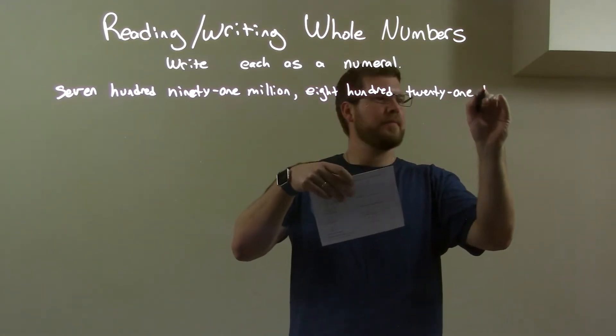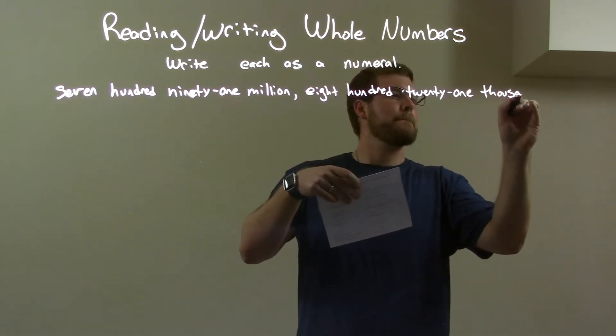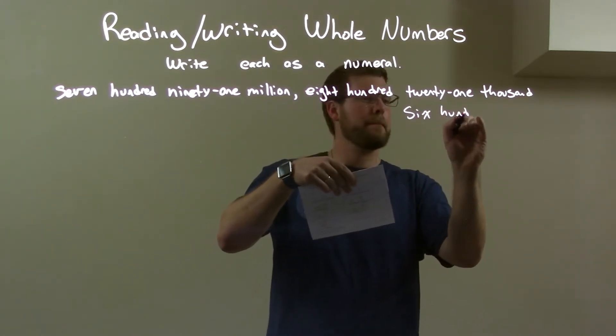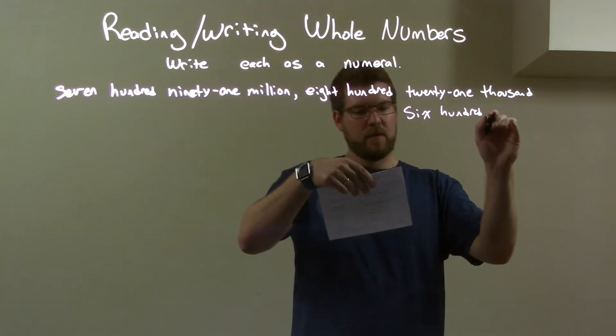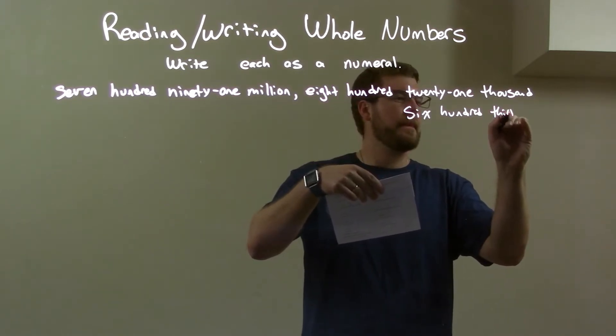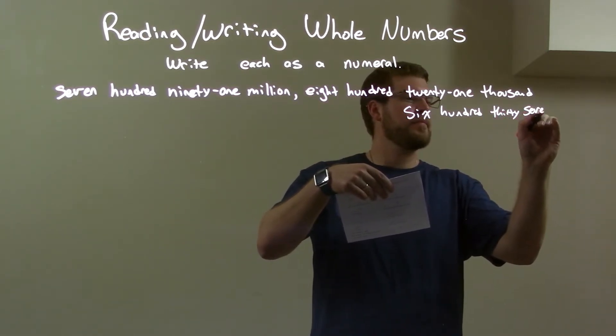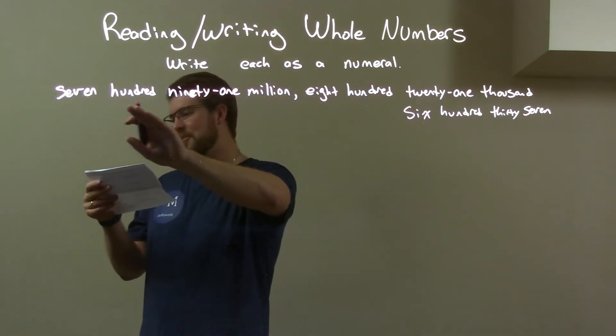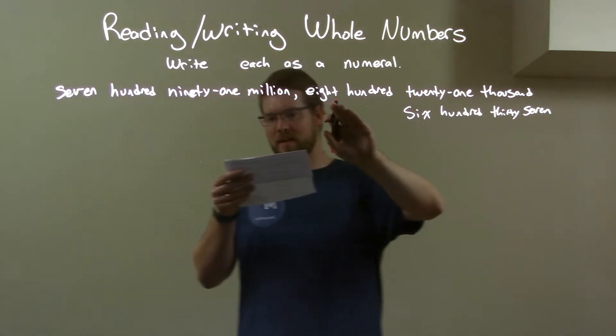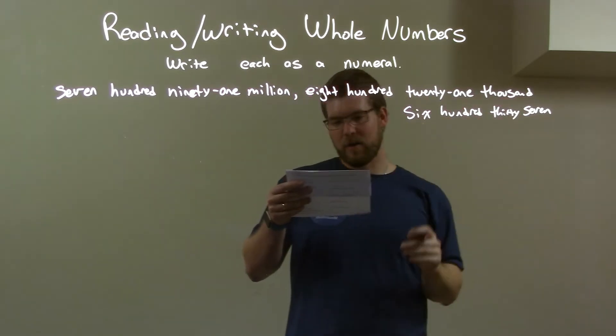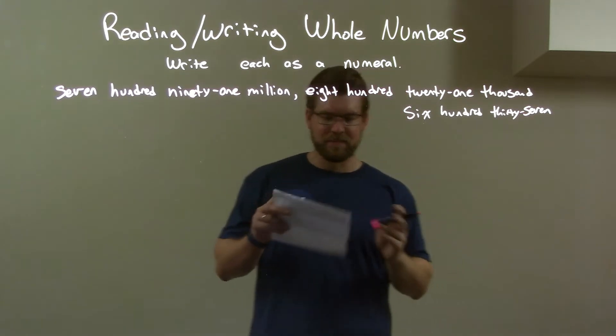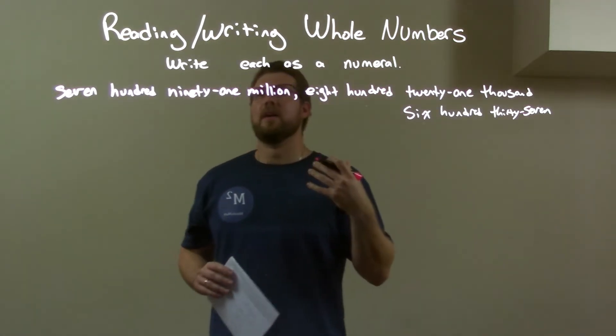thousand, six hundred thirty-seven. Okay, so I double-check here. Seven hundred ninety-one million, eight hundred twenty-one thousand, six hundred thirty-seven. Okay, so if I want to write this as a number, well